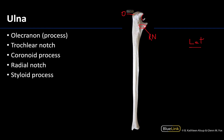This smooth area here is the trochlear notch. The trochlear notch is what grips the trochlea of the humerus, playing a huge role in the humeral-ulnar joint. Then this projection here is the coronoid process — whereas the olecranon projects posteriorly, the coronoid process projects anteriorly and forms the end of the trochlear notch. The brachialis muscle attaches here and continues to attach a little bit distal to the coronoid process as well.